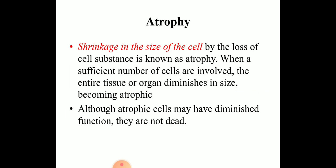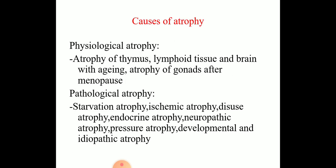Atrophy — what is atrophy? It is a decrease in the size of the cell by the loss of cell substance. When a sufficient number of cells are involved, the entire tissue or organ diminishes in size and becomes atrophic. Although atrophic cells may have diminished function, they are not dead. Causes of physiological atrophy include atrophy of the thymus, lymphoid tissue, and brain with aging, atrophy of the ovary at menopause. Normally, the notochord and thyroglossal duct undergo atrophy during fetal development. The decrease in uterine size shortly after parturition is also a form of physiological atrophy.